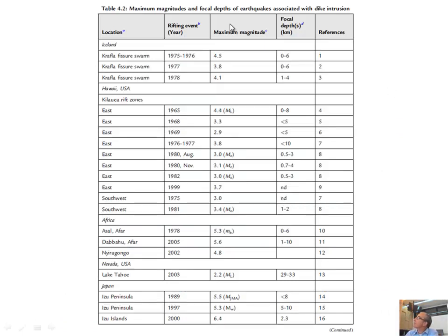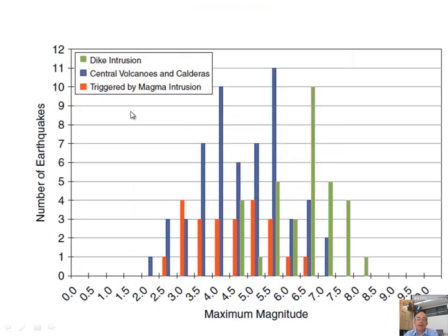Various magnitudes of earthquakes are associated with dike intrusions — usually pretty shallow but not always — and you see really big magnitudes associated with the dikes. Dikes really help drive earthquakes because the pressure is so great. For calderas and central volcanoes, you can still get pretty big earthquakes associated with the magmatic system, even at places like Merapi or similar volcanoes with deeper earthquakes. Occasionally a dike could come near the surface and drive some important shaking.